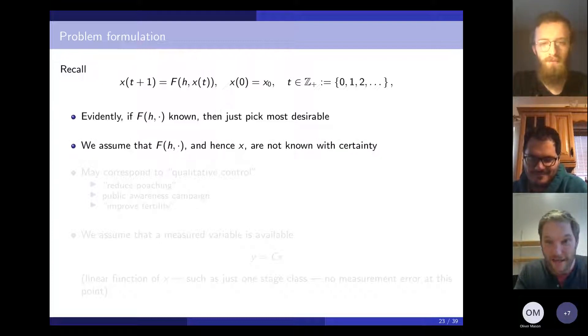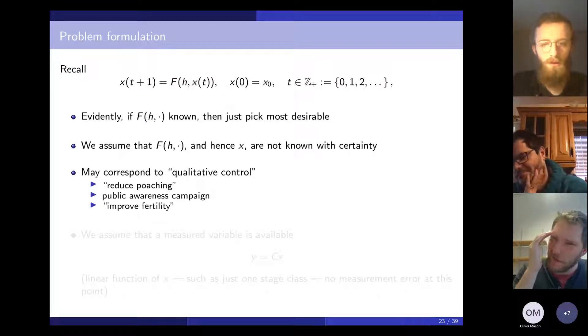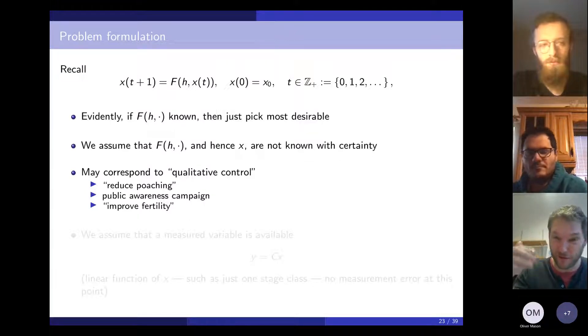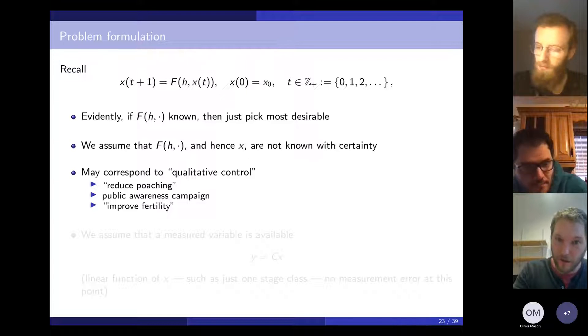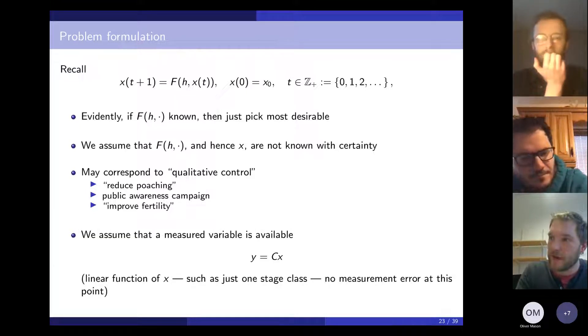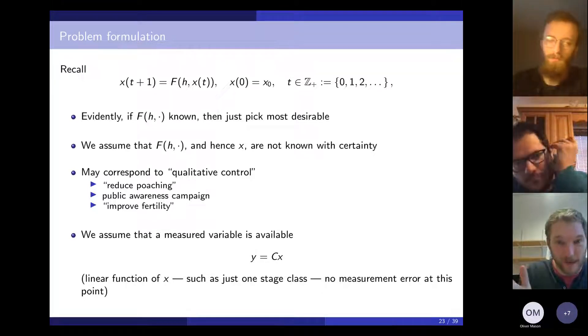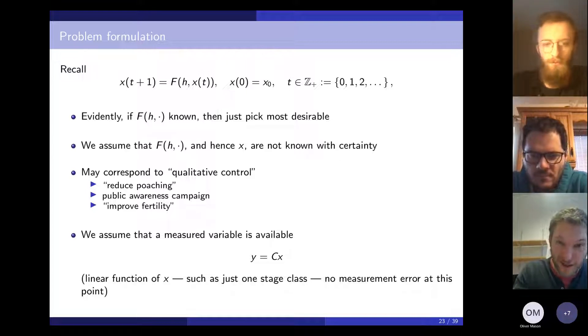We don't know these f, right? That's the key idea. We're assuming from a robust control perspective that they're there, but we don't know them. Because clearly, if you knew them, you'd just pick the one that was best. You just look at them and say, well, this one has nice dynamics, this one doesn't have nice dynamics. We're not assuming that solution is available. In particular, you can't just iterate this. X is not known with certainty. You might say, what sort of control does that correspond to? I'd argue that this is qualitative things where it's quite hard to say what the quantitative effect is. Suppose you reduce poaching. That's a good thing to do to try to conserve something. But how exactly that affects the model might not be clear. Or you might run some public awareness campaign, or you might improve fertility. These are all qualitative descriptions of control you might try without saying quantitatively what they do. We're going to assume that a measured variable is available. So this is Y = C times X. This is a linear function of X. It might just be one or two stage classes. It need not be the whole state. Notice there's no measurement error at this point, which is highly idealized. If you measure something in ecology, chances are you make a mistake.